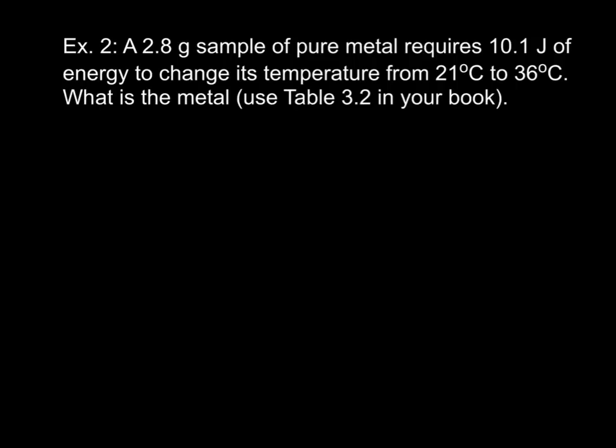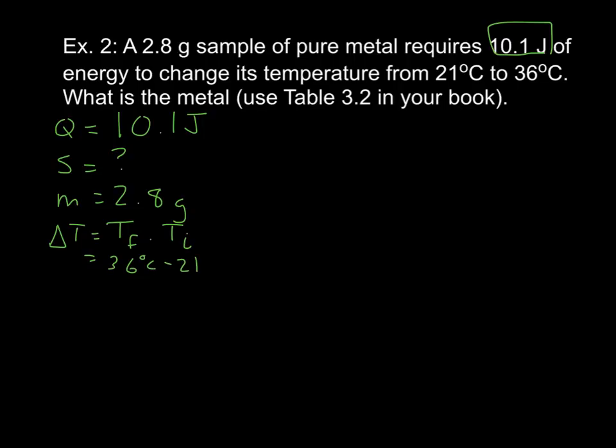Let's take a look at how we solve this problem. We know this is an energy problem. Our best bet is to start with a list of variables. Q, S, M, and delta T. In this particular case, we're given energy. We're not going to solve for it. So our Q is 10.1 joules. We are not told what the metal is. It asks us what the metal is. So we don't know what S is. Looks like we're going to be solving for S. The mass of the sample is given to us as 2.8 grams. And delta T is not given to us, but we can calculate it. So we take our final minus our initial temperature. And we get 36 degrees C minus 21 degrees C. Our change in temperature, therefore, is 15 degrees Celsius.